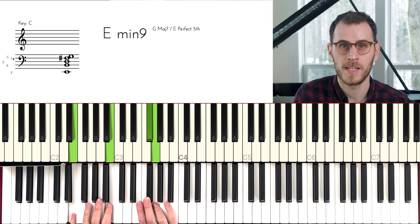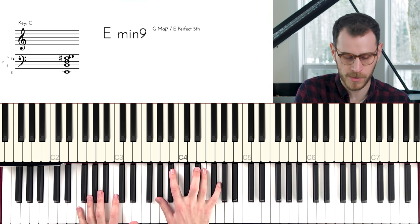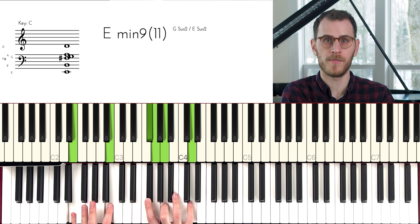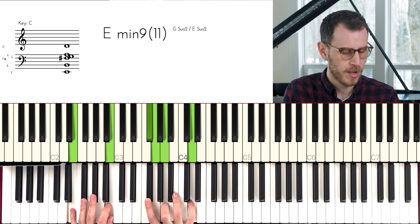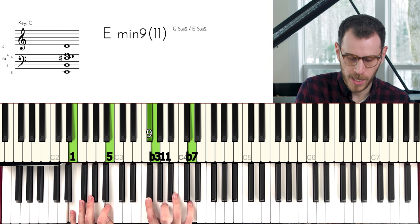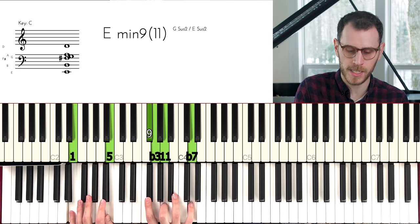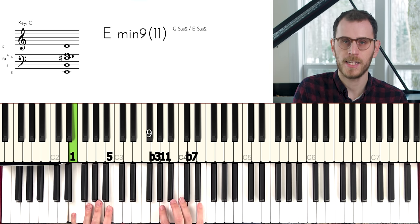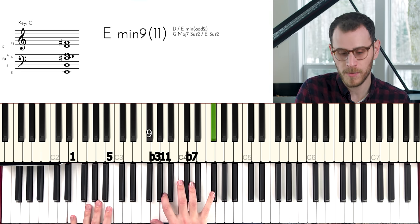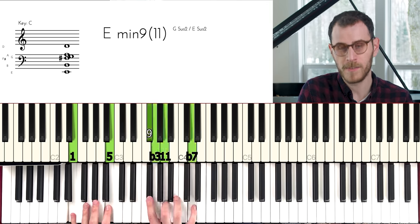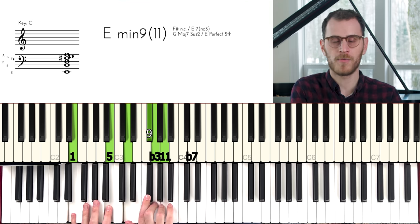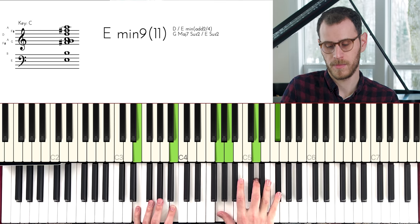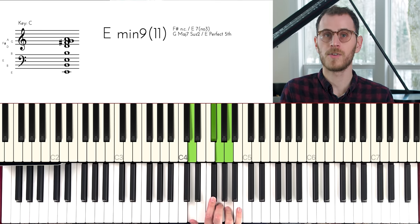So then we get this other minor 11 voicing again that I've definitely showed you on my channel before, 1, 5, 9, flat 3, 11, flat 7. So that's a really nice layout. So we have this layout, but also this layout, which gives us the cluster in here. So you can kind of see how using a melody, depending on where we want the top note, we can kind of convert the right hand of a voicing and get really nice ways of essentially changing the melody. So that's a really, really cool lesson right there.